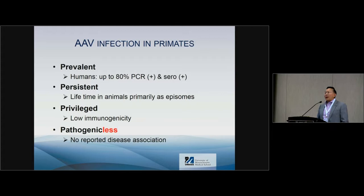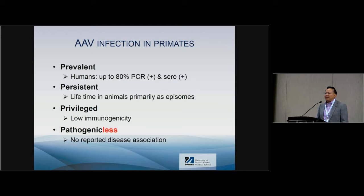AAV infection in primates can be summarized in four words. First, it is highly prevalent: more than 80% of humans are either seropositive or molecularly positive. Second, it is persistent — once infected, you carry it for a lifetime. Third, it is privileged with relatively low immunogenicity. And fourth, it is nonpathogenic — it does not cause any disease.